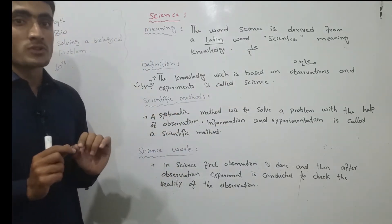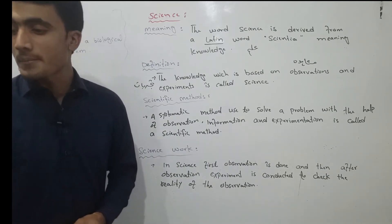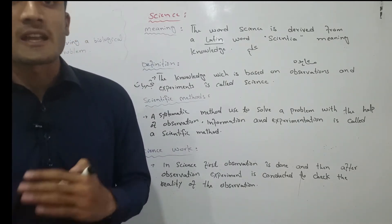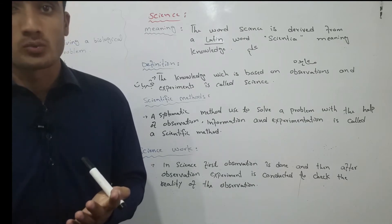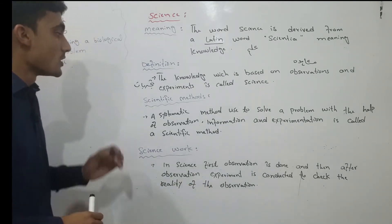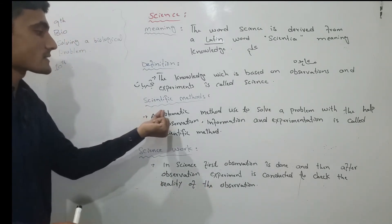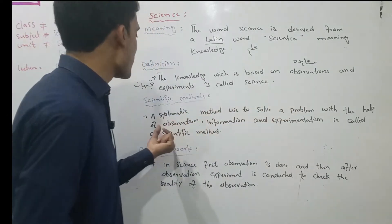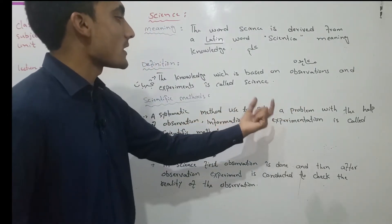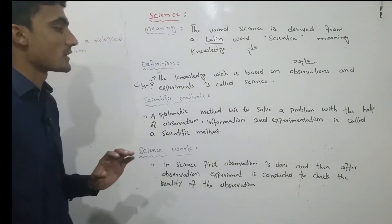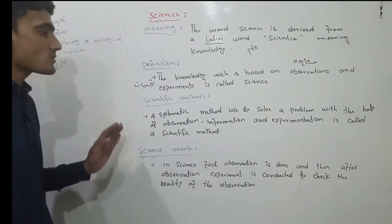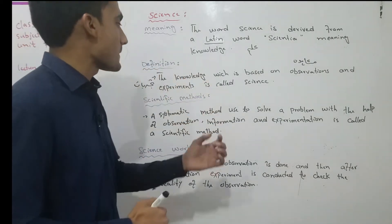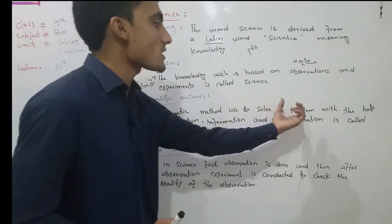Now the scientific method. We are studying chapter number 2. A systematic method used to solve a problem with the help of observation, information, and experimentation is called a scientific method. Systematic method means a step-by-step method applied to solve a problem.